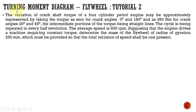Welcome to my lecture. Today we are going to see how to use the turning moment diagram to solve a problem in flywheel. The variation of crankshaft torque of a four-cylinder petrol engine may be approximately represented by taking the torque as zero for crank angles 0° and 180°, and as 260 Newton meters for crank angles 20° and 45°, with intermediate portions being straight lines. The cycle repeats every half revolution. The average speed is 600 rpm. The engine drives a machine requiring constant torque; determine the mass of the flywheel of radius of gyration 250 mm so that the total variation of speed shall be one percent.